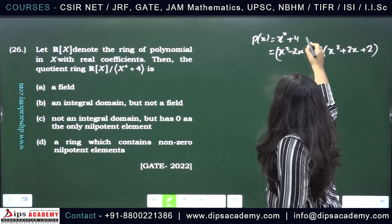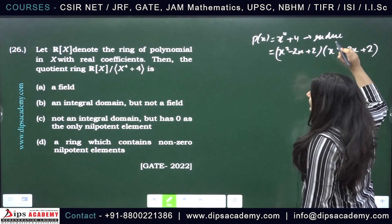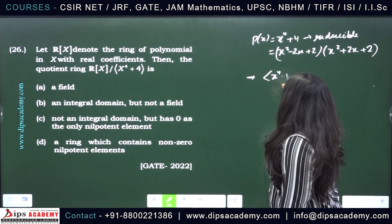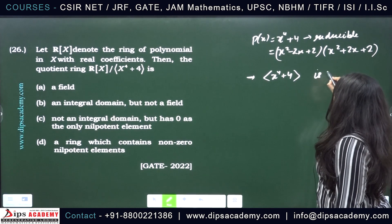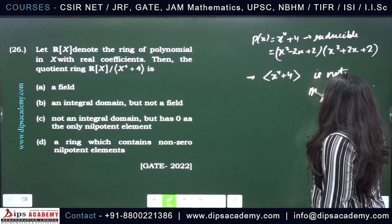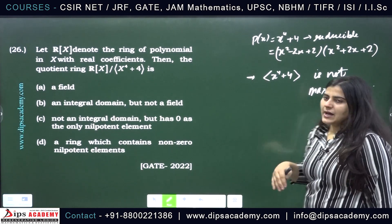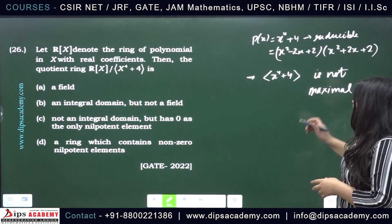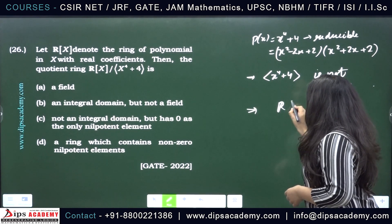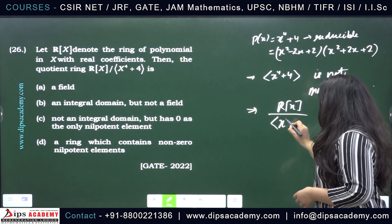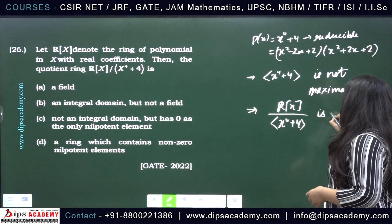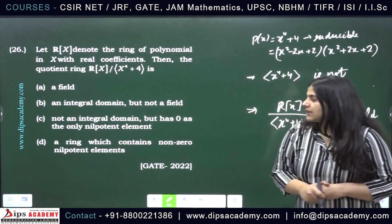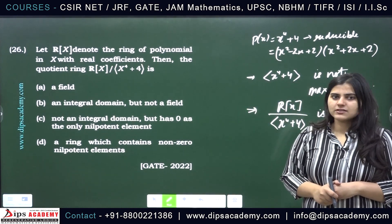Now, this polynomial is reducible, so the ideal generated by this polynomial in R[x] is never maximal. This implies the ideal generated by x⁴ + 4 is not maximal. We have the result that for any ring R, the quotient ring R/I is a field if and only if the ideal I is maximal. But here this is not a maximal ideal, which implies the quotient ring R[x]/⟨x⁴+4⟩ is not a field. So option A, which states the quotient ring is a field, is incorrect.